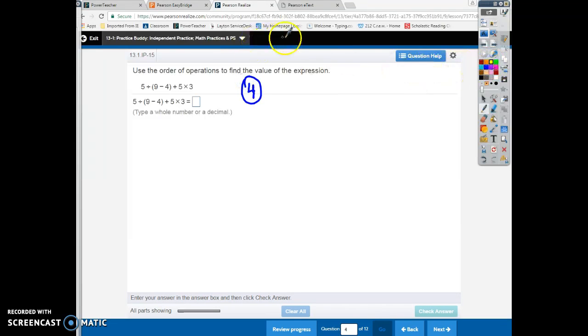And I'm going to choose to write PEMDAS. Parenthesis, exponents, multiplication, division, addition, subtraction. So we want to go ahead and write down, copy down the problem. This is problem number four. We're doing five divided by nine minus four in parentheses, plus five times three.